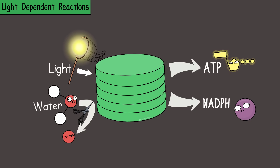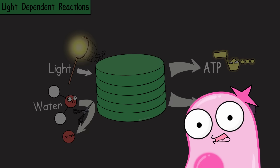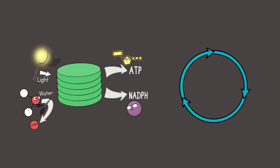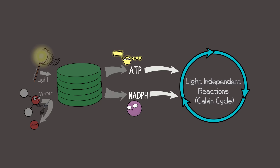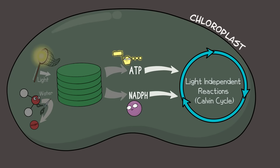The light-dependent reactions also produce ATP and NADPH. Both the ATP and NADPH will be needed for the next process, the light-independent reactions, also known as the Calvin cycle or dark reaction. The name is a bit misleading—while the process isn't directly capturing light, it doesn't require darkness either, and it will need items from the light-dependent reactions like the ATP and NADPH.